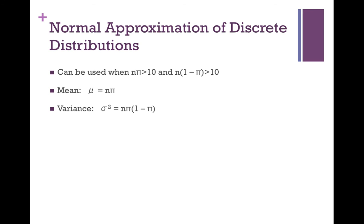The last topic was using the normal approximation for discrete distributions. This can be used with a large sample size — check that nπ > 10 and n(1−π) > 10. If true, you can approximate a discrete distribution (like binomial) using a normal distribution. In this case, the mean equals nπ and the variance equals nπ(1−π). Once you have the mean and variance, you can calculate a z-score.